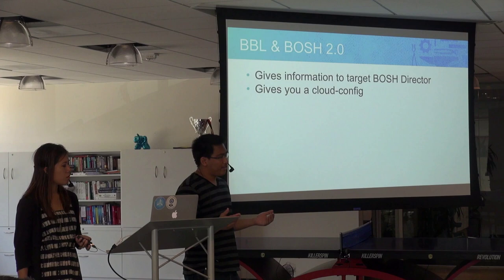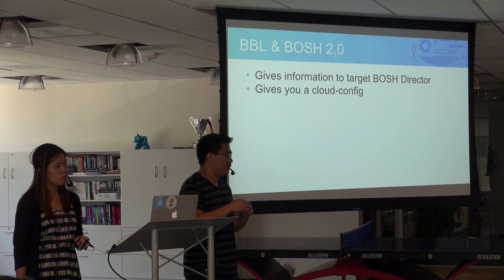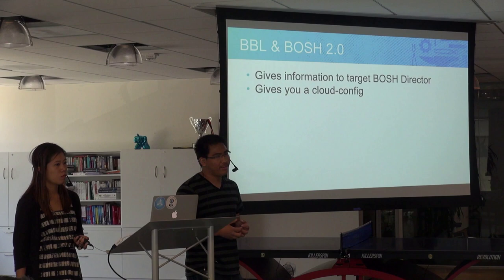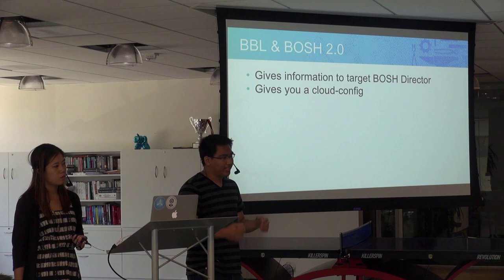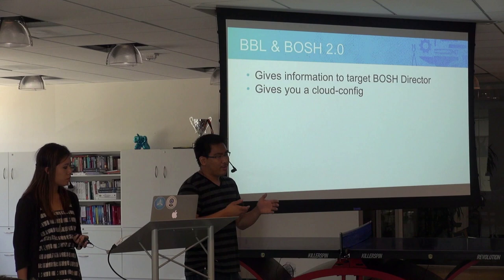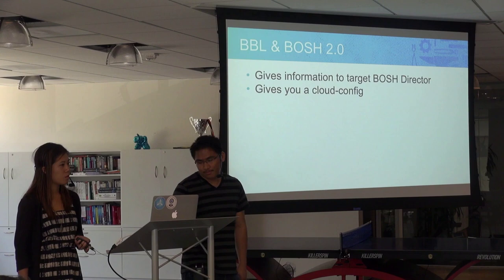The last thing that Bubl gives you is something called a Cloud Config, which is the glue that allows you to deploy a Cloud Foundry into your Bubl environment. Remember from the deployment manifests discussion — there's a lot of IaaS-specific information in there, like VM types, disk types, network information, etc. All that gets moved into this Cloud Config, so you don't have to think about it, and CF Deployment is mostly static — you can just do a BOSH deploy into a Bubl environment and it'll just work.